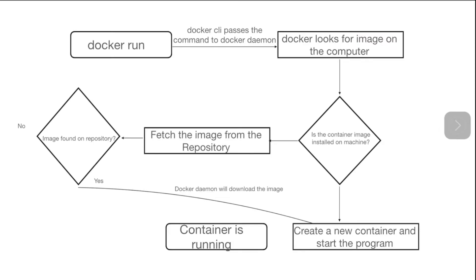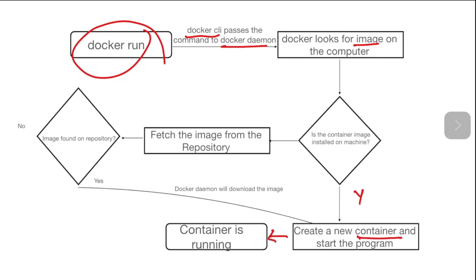Let's take an example — suppose we want to run docker run. The docker run command will be passed to the Docker CLI, the Docker CLI will pass those instructions to the Docker Daemon, and the Docker Daemon will check whether a particular image exists on the machine or not. If the image exists, it will create a container from it and will start the container, and once the container is running, the command is successfully executed.